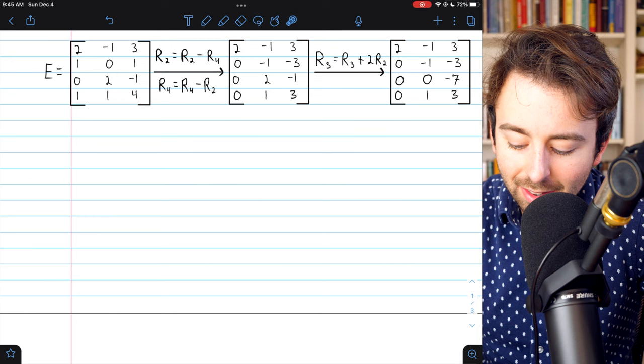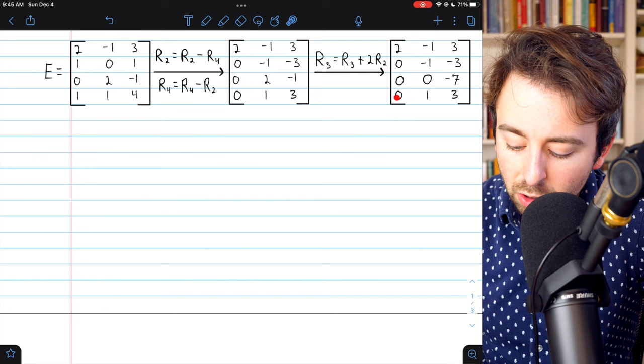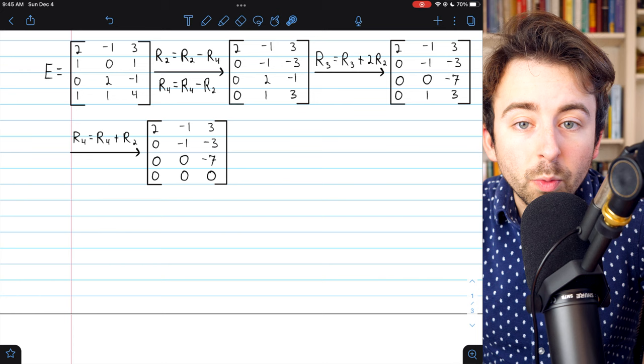Now, we also want to get rid of this one that's below the leading entry of negative one, and in order to do that, we'll simply add row two to row four, which will eliminate row four completely. So, row four is all zeros, and we can see we are now in row echelon form, and there are three non-zero rows.